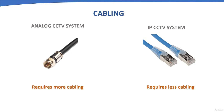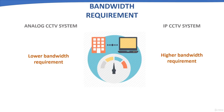An IP CCTV camera requires only a single CAT5 or CAT6 cable where both data and power supply are transmitted, requiring less cabling infrastructure. Regarding bandwidth, analog recorded video files are smaller due to lower video quality, and the DVR sends data over the network only when requested, so bandwidth requirements are lower. IP cameras, being of higher video quality — 1 megapixel, 5 megapixel or higher — with higher frame rates, require more bandwidth and are more bandwidth-hungry.